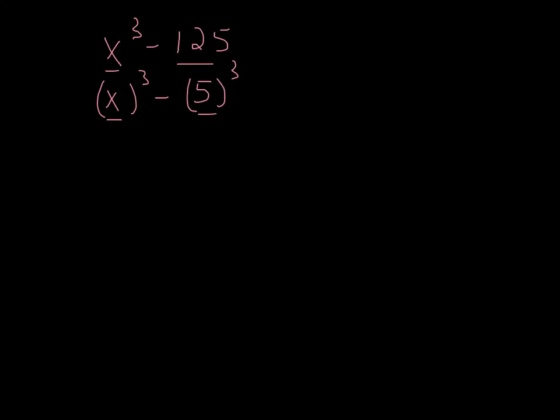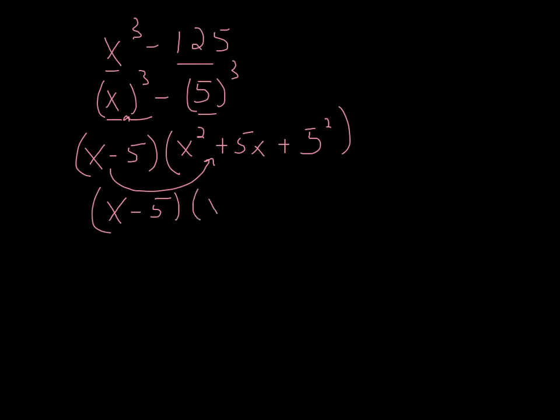And now I just follow the formula like we had on the other sheet. So whatever's inside, it always becomes x minus five times the quantity, the square of the first. So it'd be x squared, the opposite of the product, or just remember it's the opposite of that sign. So it'd be plus five x and then plus the square of the last, which would be five squared. And if we work this all out, x minus five, x squared plus five x plus 25. And there, that's factored.